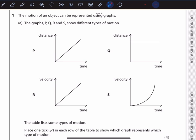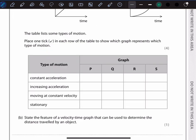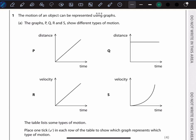is sloping upward in a straight line. This indicates the object is moving at a constant velocity because the distance increases steadily over time. So we tick moving at constant velocity for graph P.